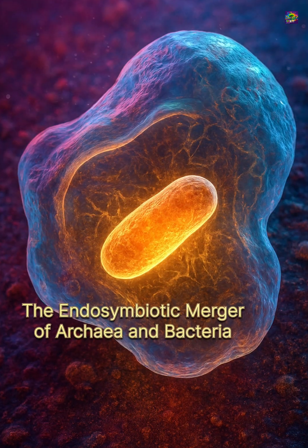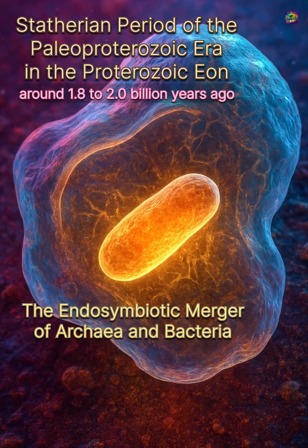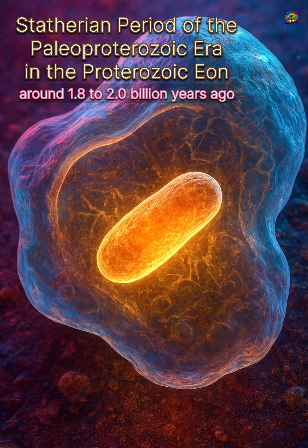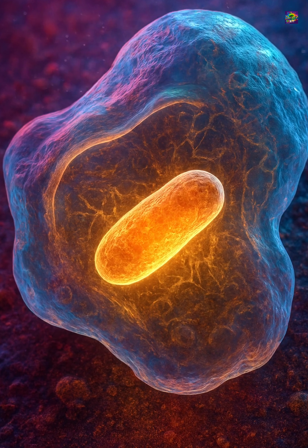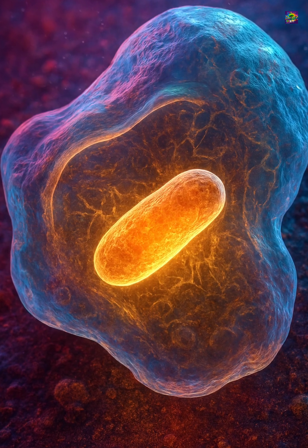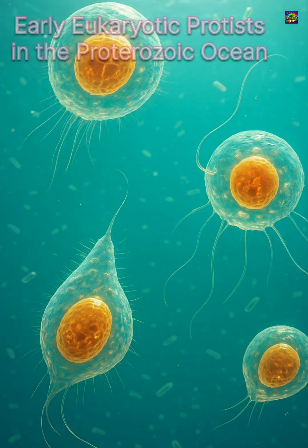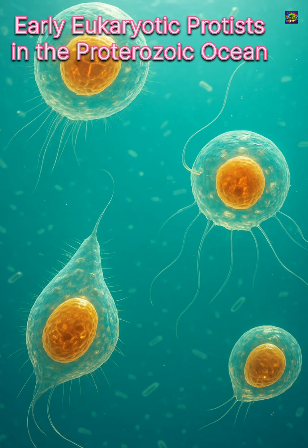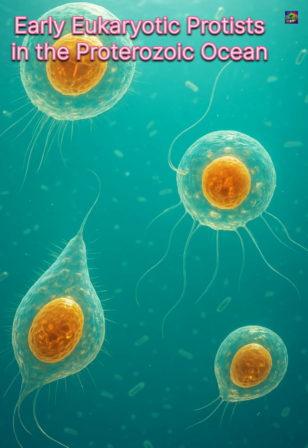Eukaryotic cells appear much later, around 1.8 to 2.0 billion years ago, when an archaeal cell merged with a bacterium, giving rise to mitochondria. This single symbiotic event created the entire eukaryotic branch of life.